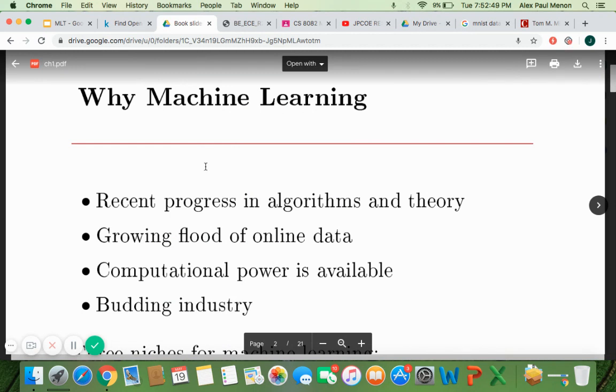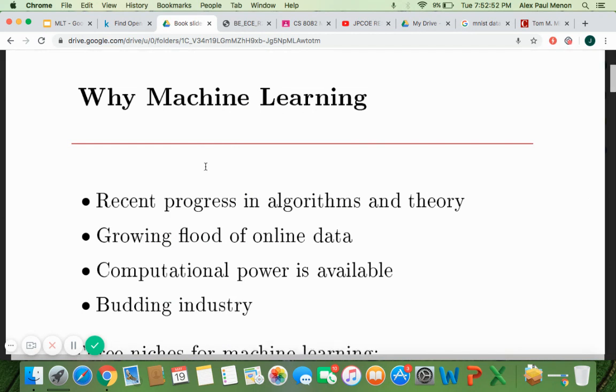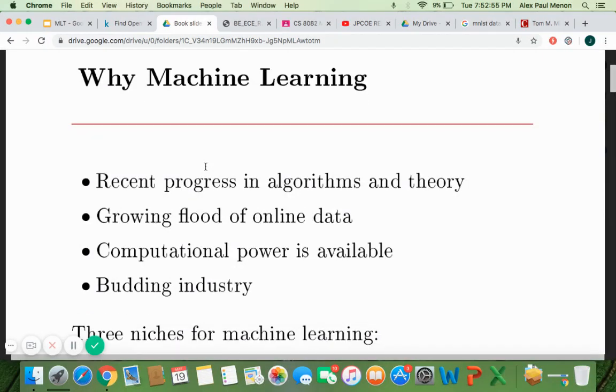So coming to the slide, we'll try to understand why machine learning. So recent progress in algorithms and theory has helped in understanding the computation in a more better manner. Whereas are we all happy with what algorithms are doing? So that's one question we should ask. Are we all happy that the algorithms which are hard-coded already with someone's imagination, is it unbiased? So these are all different questions that we try to ask.